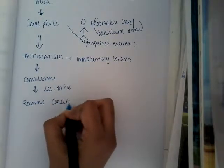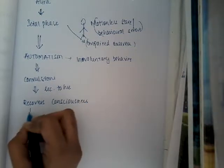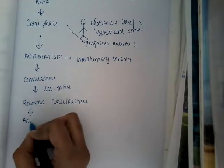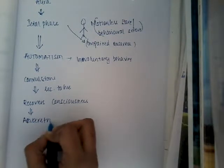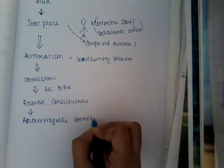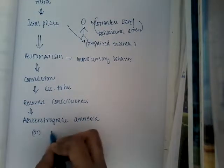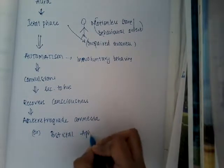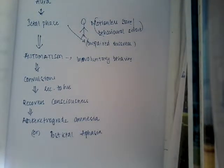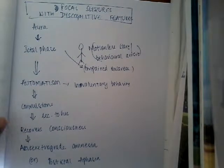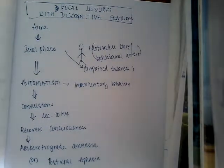After recovery, the person cannot recall what has happened — there is retrograde amnesia. Sometimes he can also have post-ictal aphasia, where the person is not able to speak after the episode. This is how the episode of focal seizures with discognitive features will progress.